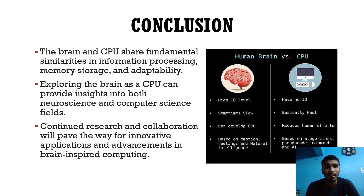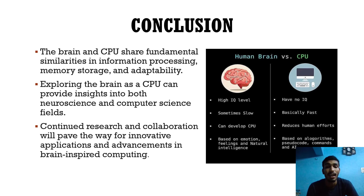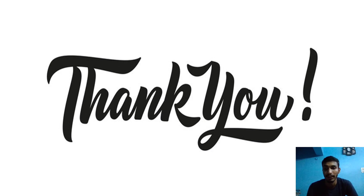Conclusion: the brain and CPU share fundamental similarities in information processing, memory storage, and adaptability. Exploring the brain as a CPU can provide insights into both neuroscience and computer science. Continued research and collaboration will pave the way for innovative applications and advancements in brain-inspired computing. I hope this information was useful to you. Thank you.